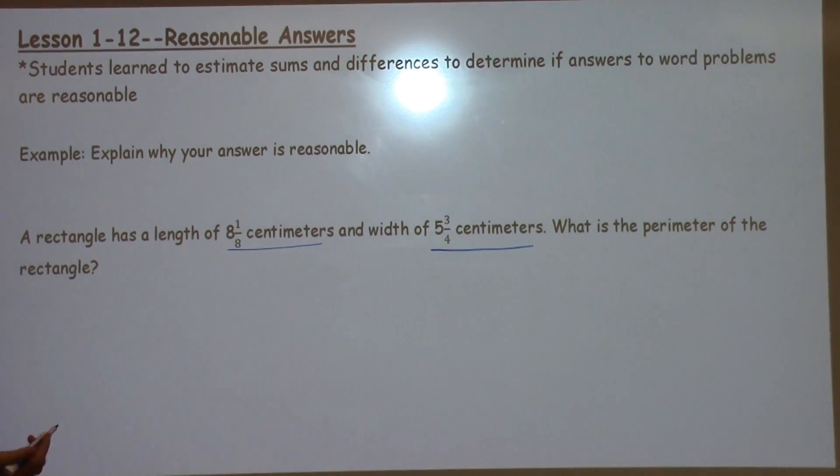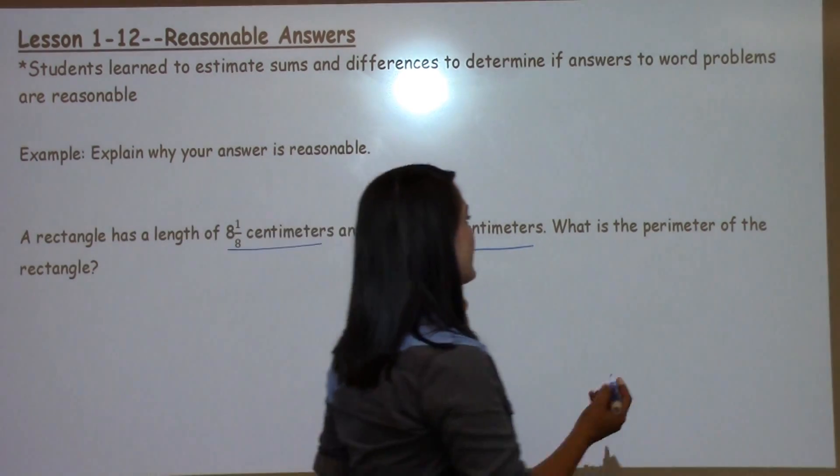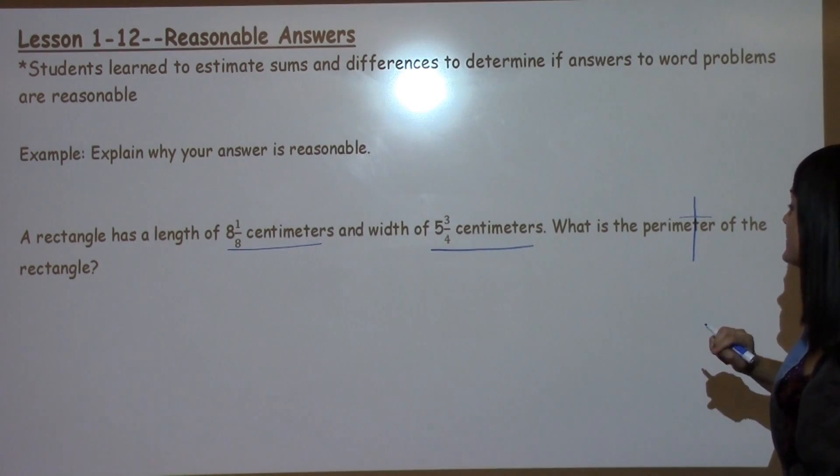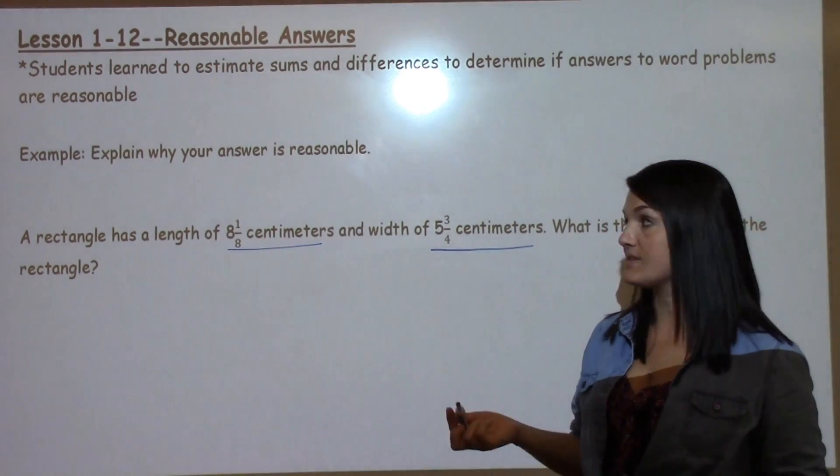What is the perimeter of the rectangle? In 5th grade, one thing that we use to help us remember perimeter means to add is the T in perimeter. Perimeter means to add all of the sides.